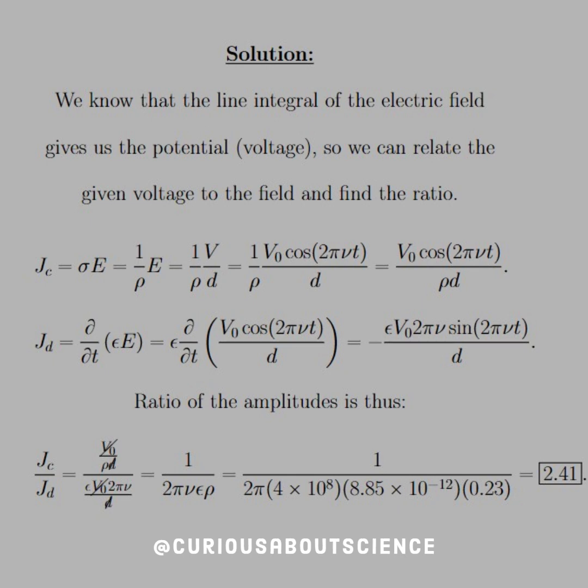And then similarly, Jd is equal to the time derivative of this electric field with epsilon. So we take epsilon and pull it outside. And then pushing it through, you see, if we take the time derivative, we get a negative sine 2 pi nu T, and then chain rule gives us an extra factor of 2 pi nu.